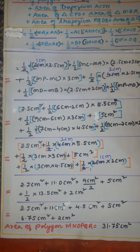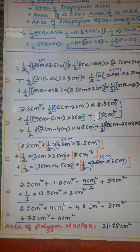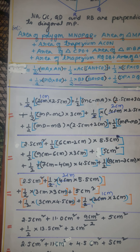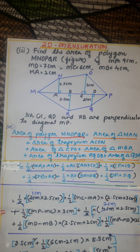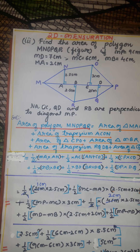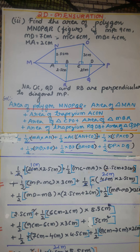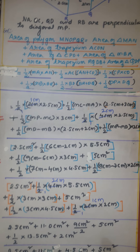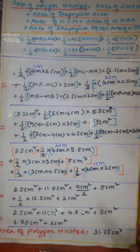So dear student, you have to be very careful in writing the steps by making use of brackets. For each shape, the formula you are writing, you have to use brackets in order to avoid confusion. Can you see how polygon MNOPQR was divided into shapes, and how we arrived at the final answer? Area of polygon MNOPQR equals 31.75 cm².